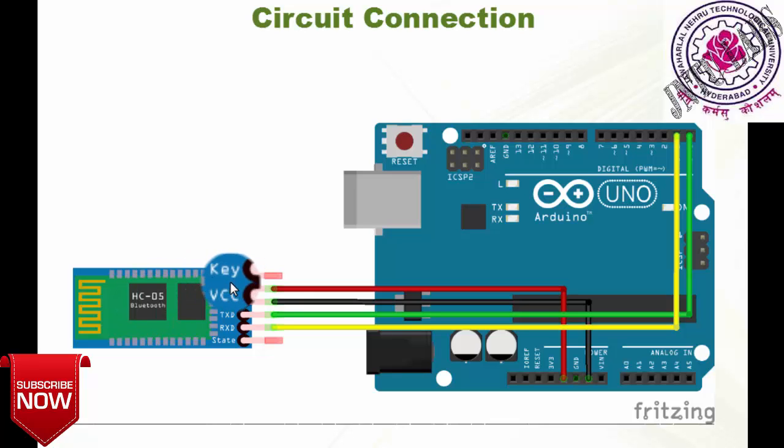VCC is to be connected to your VCC 5 volts, and ground is to be connected to your ground. Next, the TX (transmitter) pin is connected to the RX (receiver) pin of your Arduino board. And RX (receiver) pin is connected to your TX (transmitter) pin—receiver is connected to transmitter.